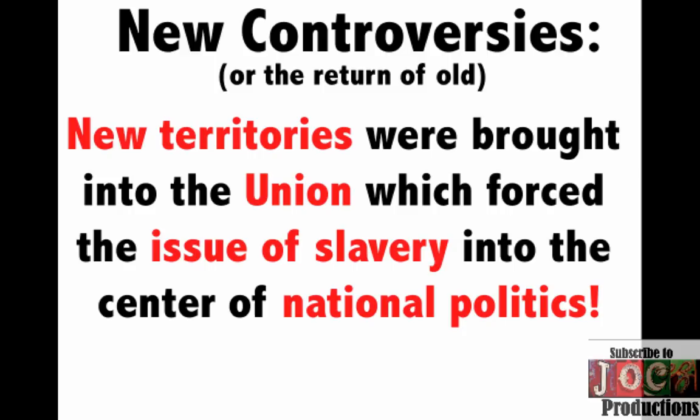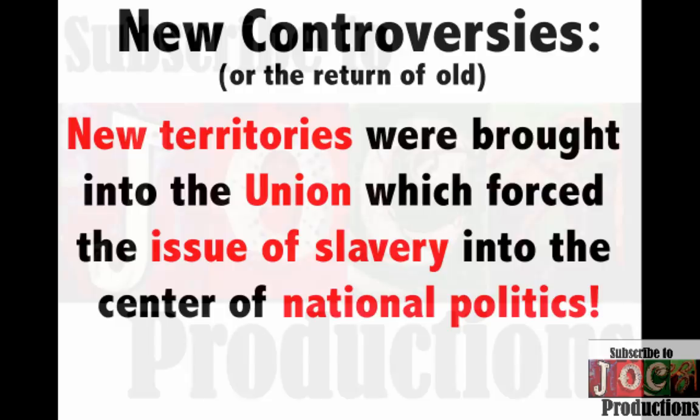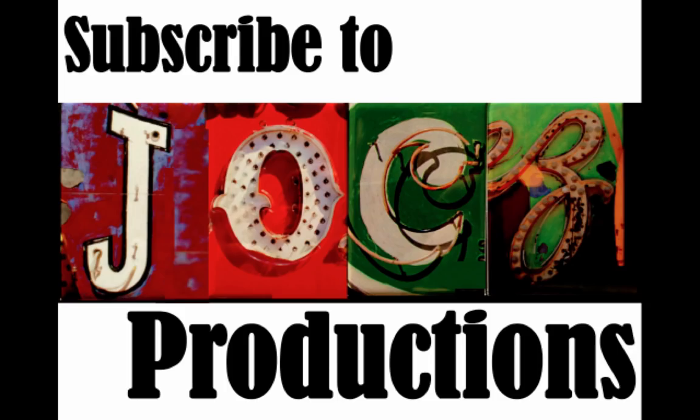That's the summary of Tyler and Polk, covering chapter 17 for the American Pageant and some of those other chapters. Hopefully you learned some stuff and you're going to get that five on that AP exam. If you haven't already done so, make sure you subscribe to Joe's Production — you can do it for free. If the video helped you out, click like and post a comment.